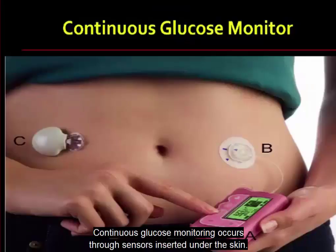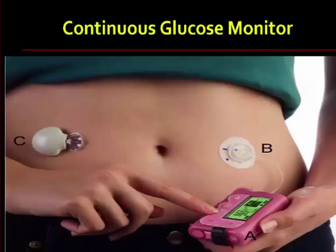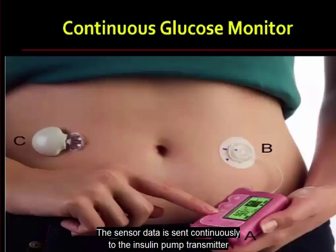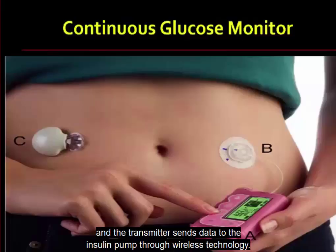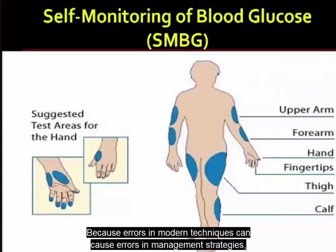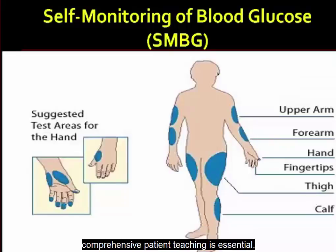Continuous glucose monitoring occurs through sensors inserted under the skin. The sensor data is sent continuously to the insulin pump transmitter, and the transmitter sends data to the insulin pump through wireless technology. Because errors in monitoring techniques can cause errors in management strategies, comprehensive patient teaching is essential.